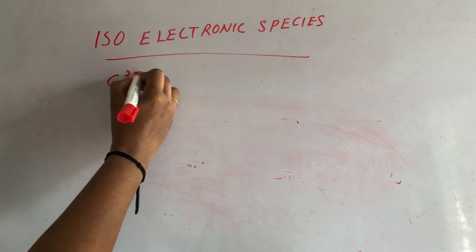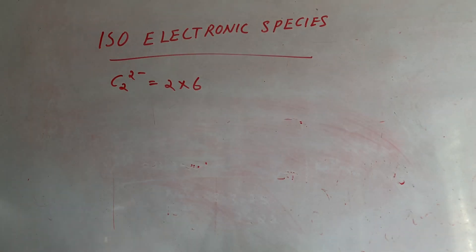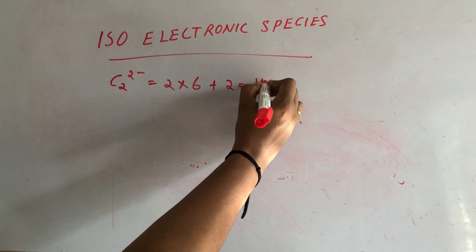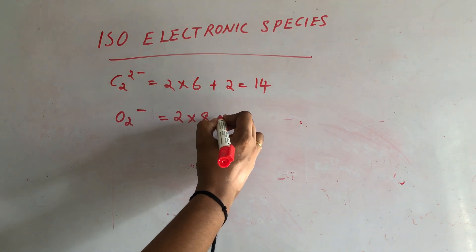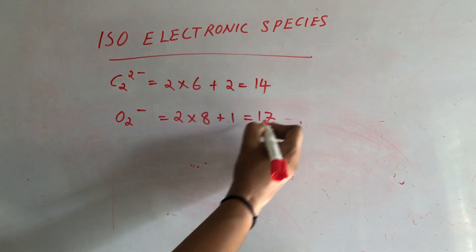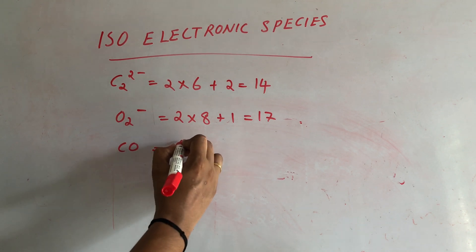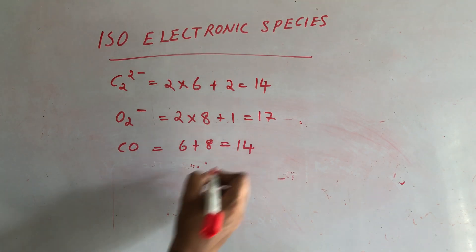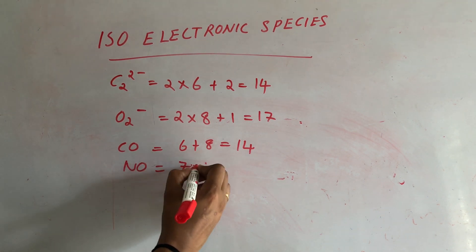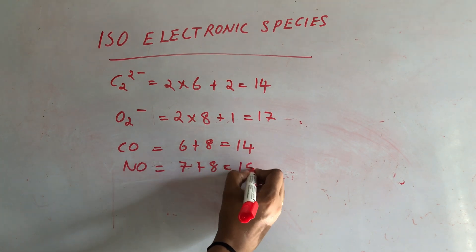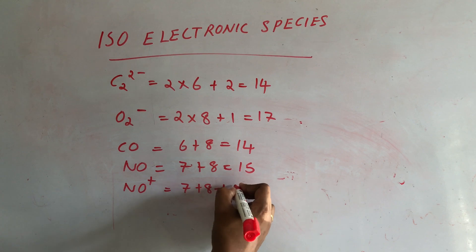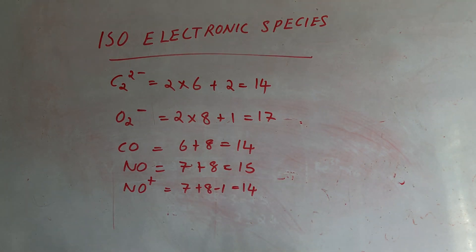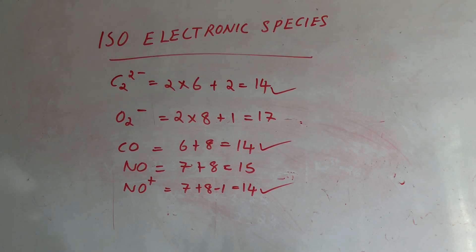Let's find isoelectronic species among molecules. C2 2- has 2 times 6 plus 2 equals 14 electrons. O2 has 2 times 8 equals 16, plus 1 equals 17. CO has carbon (6) plus oxygen (8) equals 14 electrons. NO has nitrogen (7) plus oxygen (8) equals 15 electrons. NO+ gives 7 plus 8 minus 1 equals 14 electrons. So C2 2-, CO, and NO+ all have 14 electrons — they are isoelectronic.